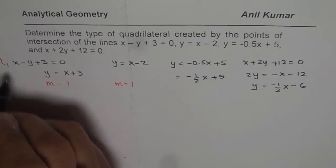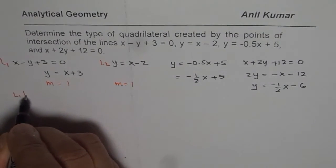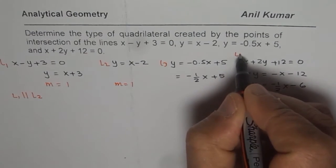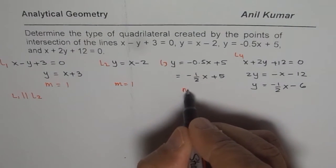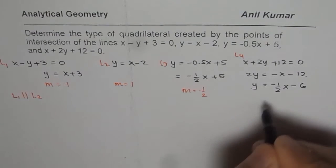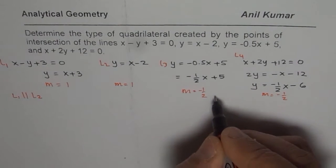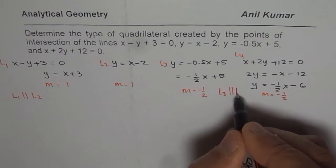So let us call them as line 1, line 2. So what we notice is that line 1 is parallel to line 2. Let this be line 3, and let this be line 4. Now, the slope here is again minus half in this case, and slope here is minus half also, that means line 3 and 4 are parallel.